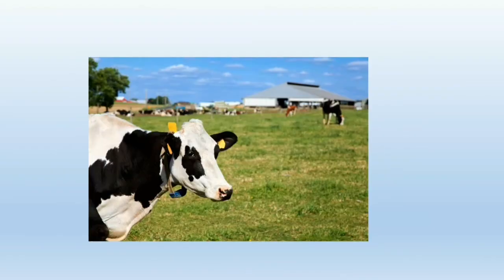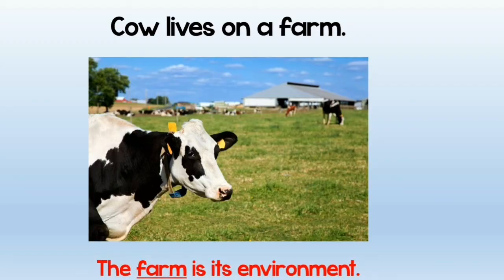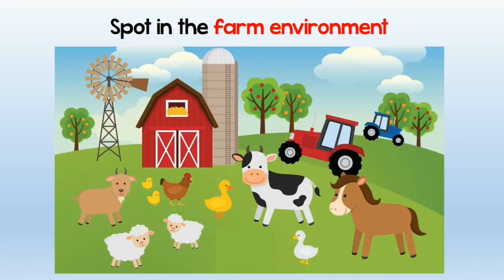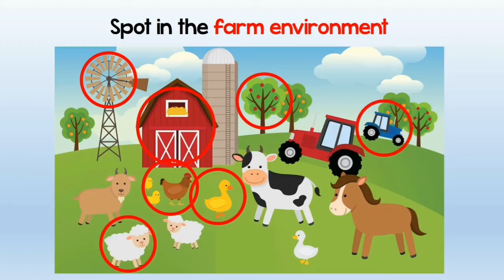Another example is the cow living on a farm. The environment of this cow must be the farm. What can you spot on a farm environment? You can spot animals such as sheep, ducks and chicken, and also different things such as trees and non-living things such as a windmill, a barn and a tractor. All these things together make up a farm environment.